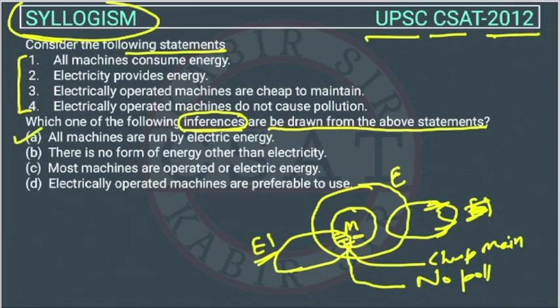Option A: all machines are run by electric energy. But only this shaded area represents machines run by electric energy, not all machines. So this option is wrong — the first statement is wrong.